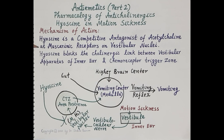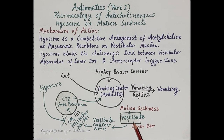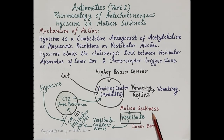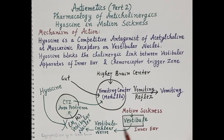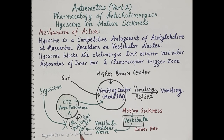Now look at this diagram. This diagram shows the vestibular apparatus or vestibule — an organ located in the inner ear that regulates the balance of the body. The inner ear or vestibule generates impulses due to motion sickness, for example while riding in a roller coaster. These impulses generated by the vestibular apparatus are carried by the vestibulocochlear nerve to the vestibular nuclei located in the brain stem.